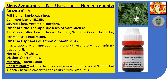Science, symptoms and uses of homeo remedy Sambucus. Full name: Sambucus Nigra. Common name: Elder. Source: Plant, Vegetable Kingdom. The therapeutic uses of Sambucus are: respiratory affections, urinary affections, skin affections, headache, hoarseness, and perspiration.